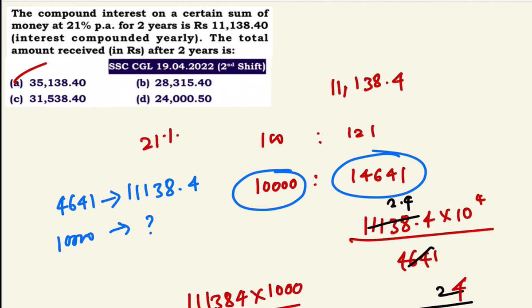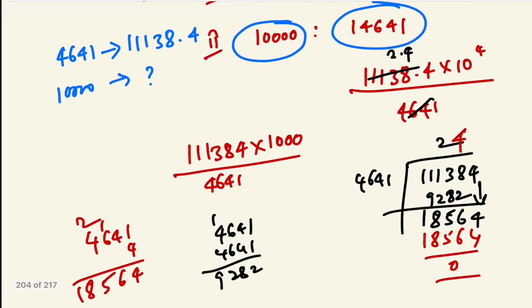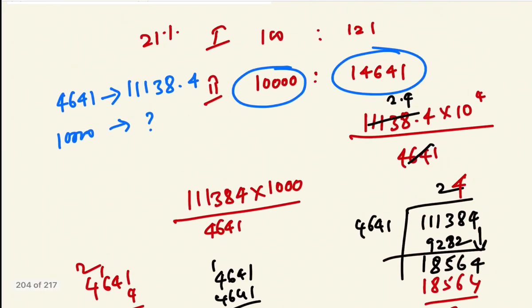So for compound interest, we used the ratio method. 4641 over 10000 scaled by the principal gives the amount. Principal plus compound interest gives the total amount. We can also do a slightly faster calculation using the same approach.